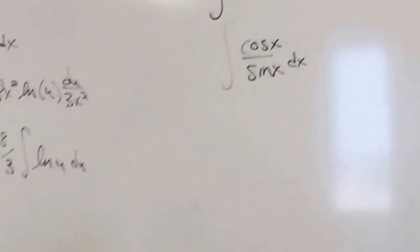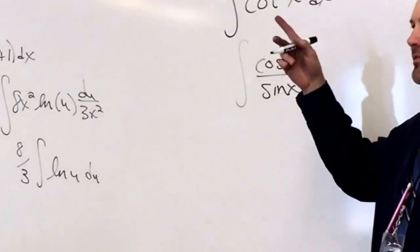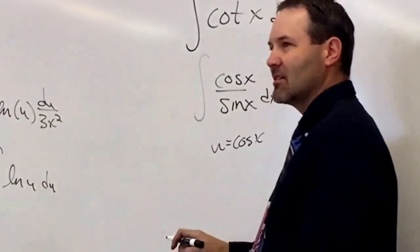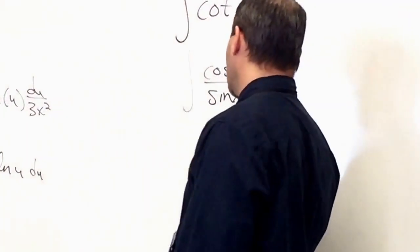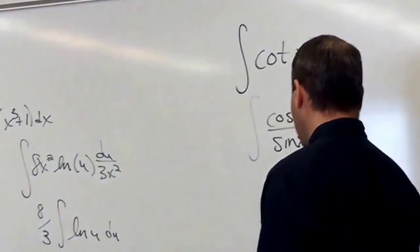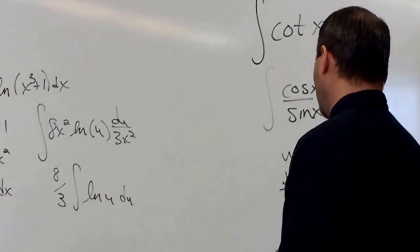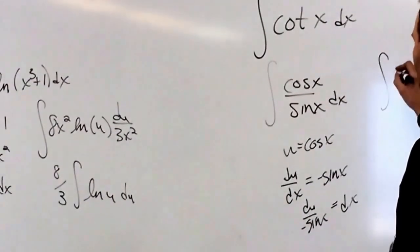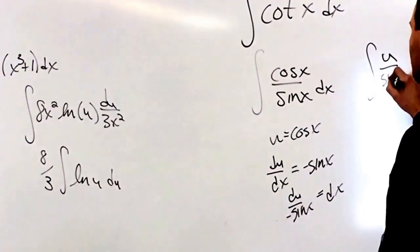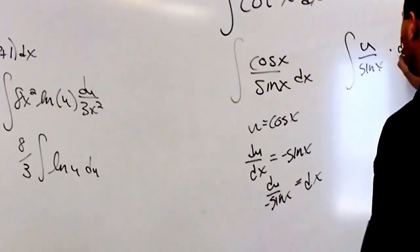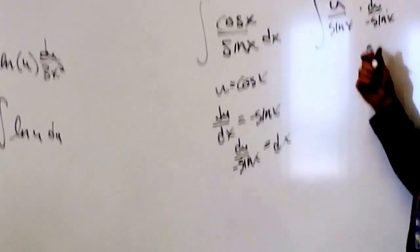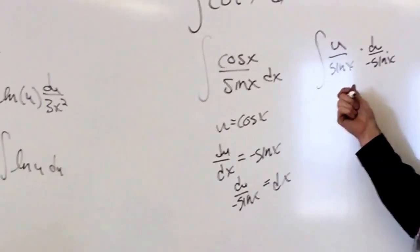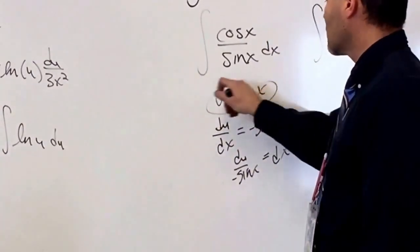We could either choose cosine x or sine x. And we know the derivative of them are the opposite, so it's going to undo something. So let's try cosine x, even though that's the wrong choice. So du dx equals negative sine x. Dx equals du over negative sine x. We chose the wrong thing. It didn't get rid of our x stuff. We have u's and x's. We did something wrong. So that is not the right choice for u.